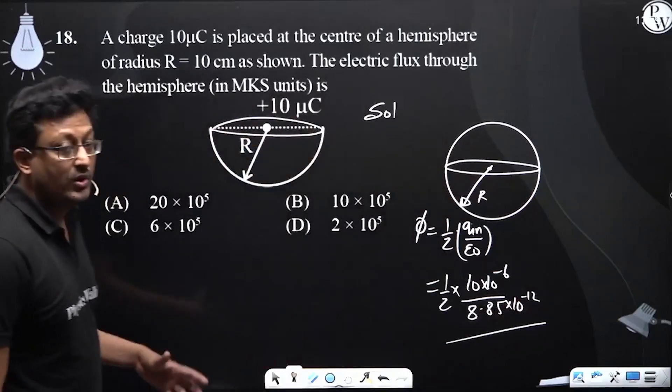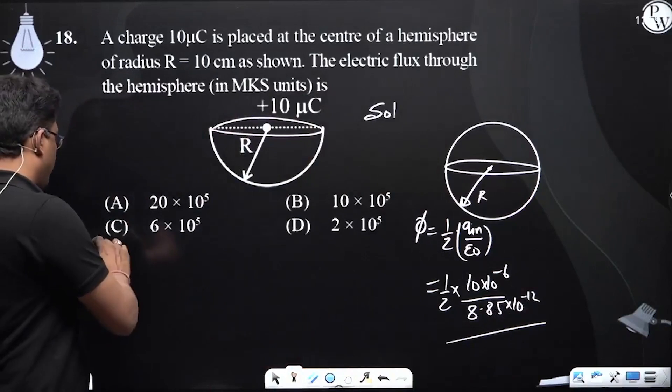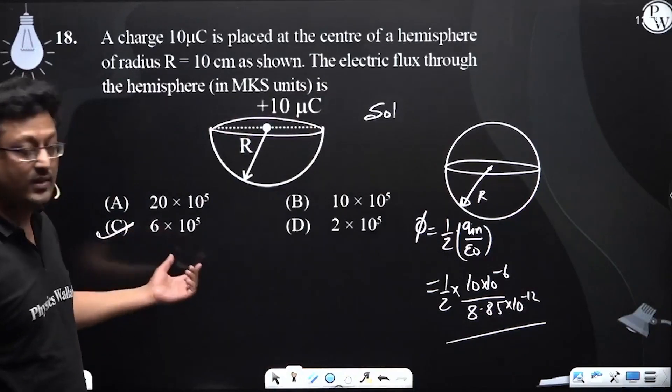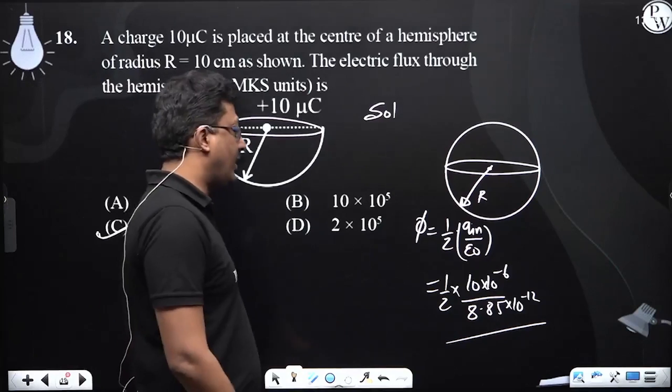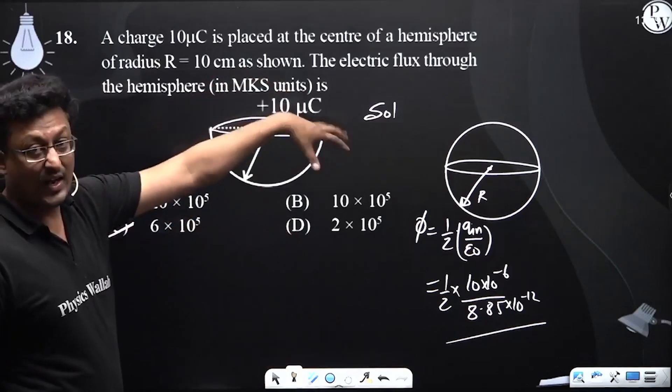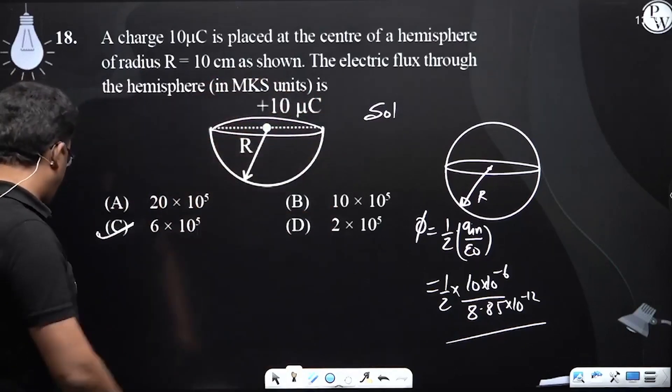When you calculate the flux, the most appropriate value that comes out is 6 into 10 to the power 5. So this was our question number 18.